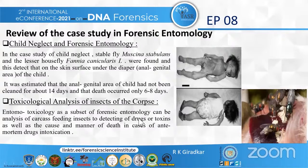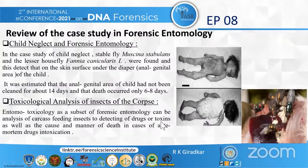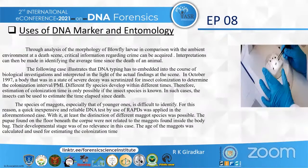The second case is toxicological analysis of insects on the corpse. Entomotoxicology, as a subset of forensic entomology, involves analysis of carcass-feeding insects to detect drugs or toxins, as well as the cause and manner of death in cases of ante-mortem drug intoxication. The aim of this study was to determine the presence and quantity of morphine in insects on the carcasses and compare with a decomposing carcass.